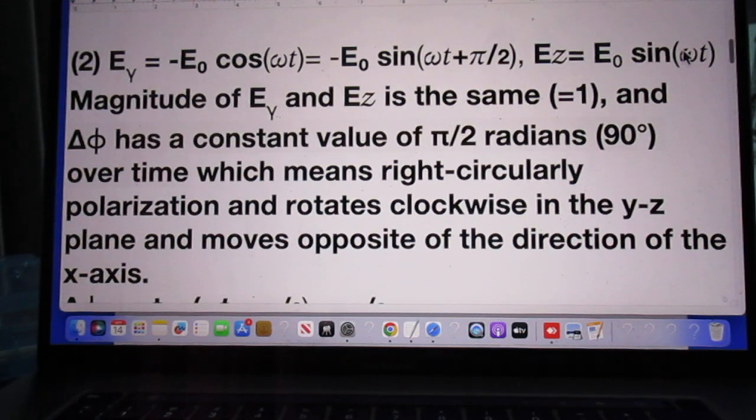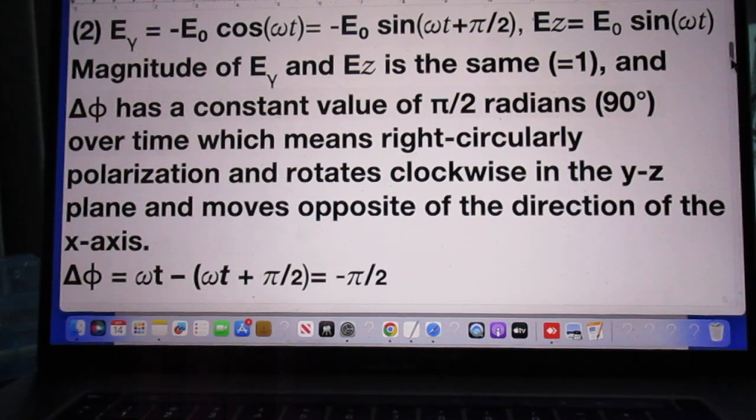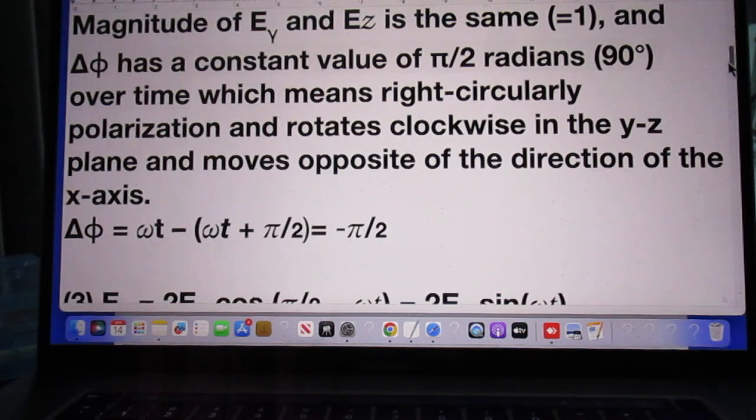2, E_y is minus E_0 cosine omega t, which is minus E_0 of the sine of omega t plus pi over 2. And E_z is E_0 cosine omega t. The magnitude of E_y and E_z is the same. So it's one. And delta phi has a constant value of pi over 2 radians, which is 90 degrees.